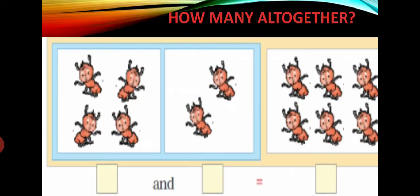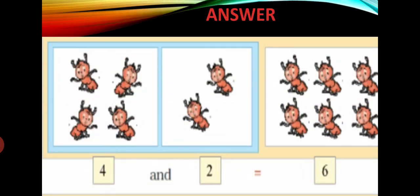Next. In the first box, count the number of ants: 1, 2, 3, 4. 4 ants are there. 2 more ants are coming to them. So 4 and 2 that is equal to 6. Now count the total ants: 1, 2, 3, 4, 5, 6. So 4 and 2 that is equal to 6. Or 4 plus 2 is equal to 6. In this way you can write down.